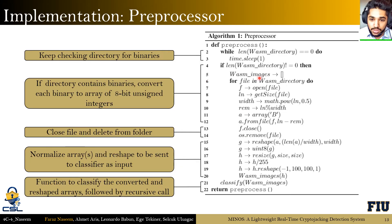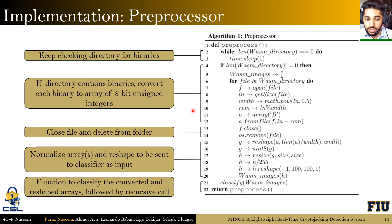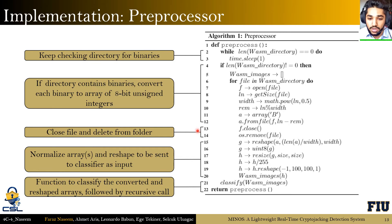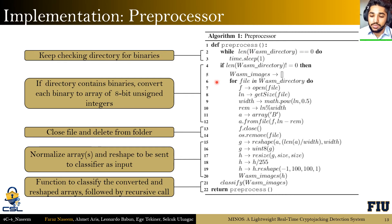Our second component is the preprocessor. You can see a pseudocode representation here. In the first two lines, the specified folder is checked for the presence of binaries. In lines 4 to 12, if the directory contains binaries, each binary is converted into an array of 8-bit unsigned integers, effectively converting it into a grayscale image. In lines 13 to 14, the file is closed and deleted from the folder so it is ready to receive more WebAssembly binaries as the user continues browsing. The array is then resized and reshaped to be sent to the classifier as input, and the function ends with a recursive call to itself so the directory continues to be checked for new binaries.